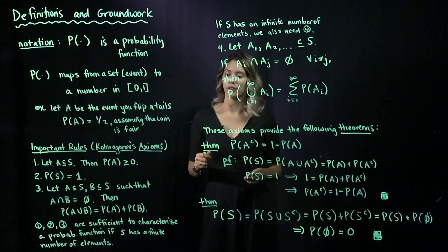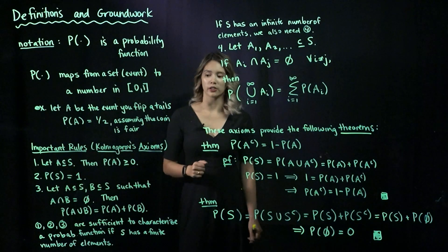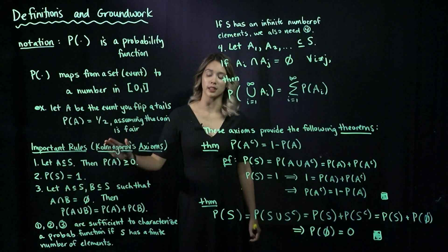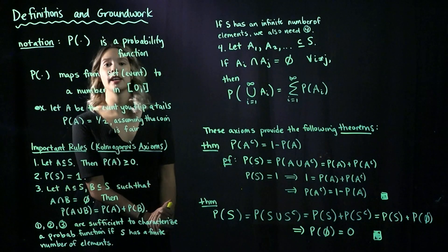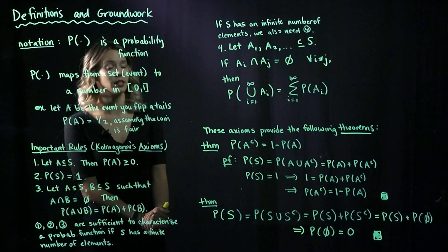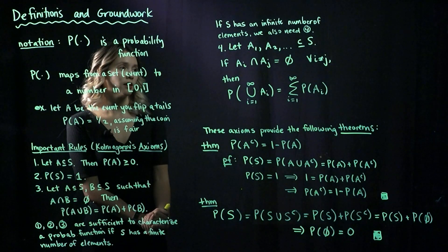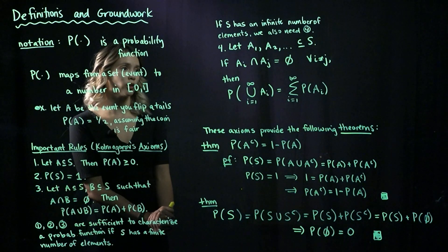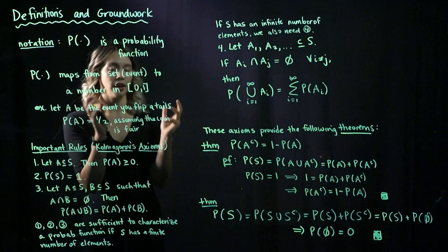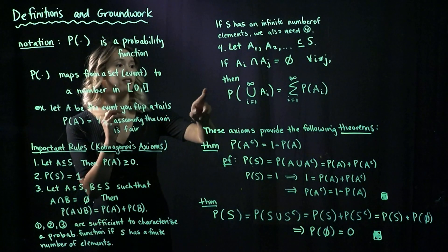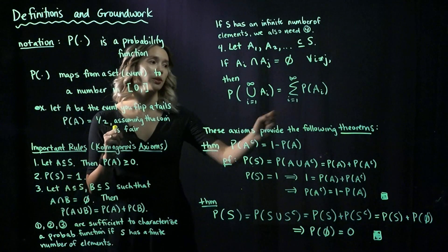If we have a finite number of elements in our sample space, these three axioms are enough to characterize our probability function. If there is an infinite number of elements, we need just one more. Let A1, A2, and so on all be events in our sample space S. If A_i intersect A_j is the empty set for all i not equal to j — in other words, choose any two events in S and they're disjoint — then the probability of the union of all those events is just the sum of their probabilities.